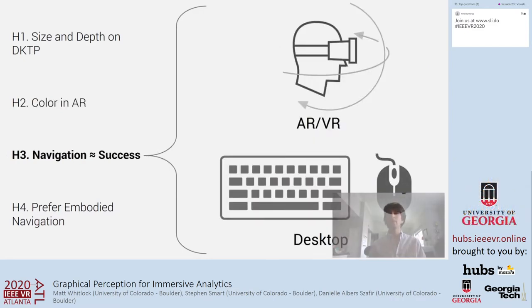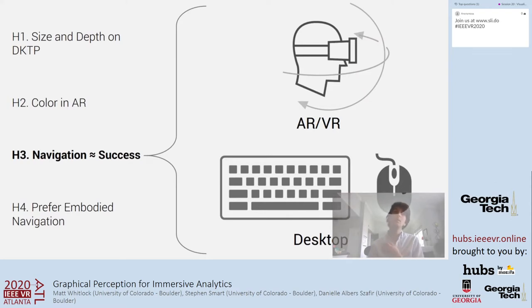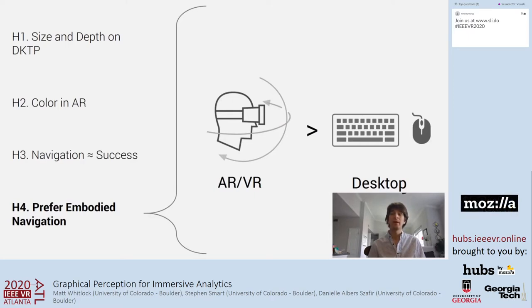We also anticipated that participants on the desktop and in VR would be able to distinguish differences in color reasonably well, but that participants in AR would struggle identifying those color differences against a non-constant backdrop. Third, we expected the effectiveness of the navigation interface would correlate to performance with depth, height, and 4D visualizations, which all require some amount of navigation. Lastly, we expected a subjective preference toward embodied navigation over the mouse and keyboard.